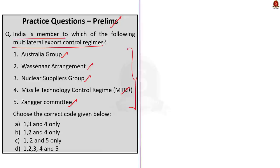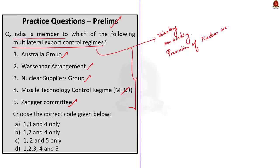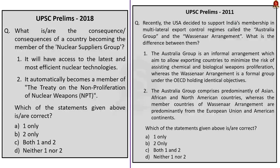Multilateral export control regimes are voluntary and non-binding arrangements of major nuclear fuel or supplier countries, aiming to prevent the proliferation of weapons of mass destruction, their delivery, and related equipment and technology. Questions like this are very important because two previous questions have been asked in this context — one in 2018 and another in 2011 — about the Australia Group, Wassenaar Arrangement, and NSG. So it is very important to know about these regimes.